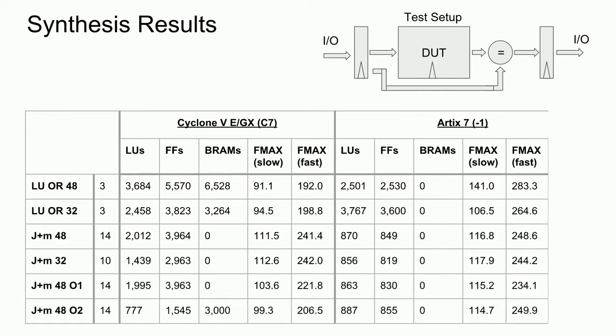I focused on optimizing the 48-entry JTLB since that's the one the PS2 uses. Various optimizations were done including logic refactoring and rewriting the logic to infer a synchronous block RAM. Interestingly, version 02 was the one with a synchronous block RAM — the Cyclone 5 ended up using block RAMs instead of registers. Note that the Artix 7 is using lookup tables as distributed RAM rather than block RAMs. We can see marginal improvements in resource usage and clock speeds in the optimized components.